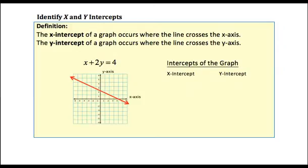Identifying the x and y intercepts. Let's start with some definitions. The x-intercept of a graph occurs where the line crosses the x-axis. The y-intercept of a graph occurs where the line crosses the y-axis. Now let's take a look at an example to see what the x and y-intercept look like.